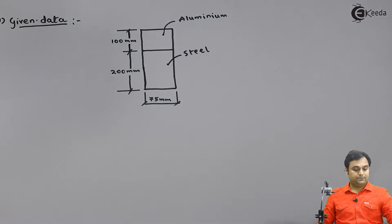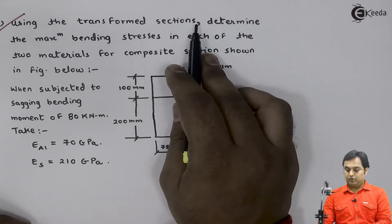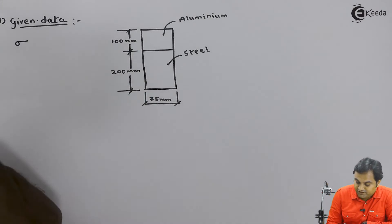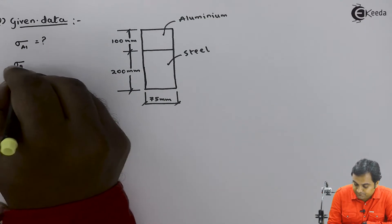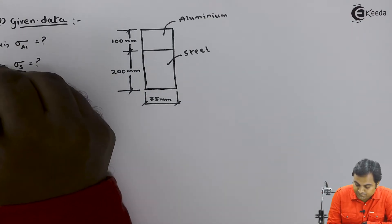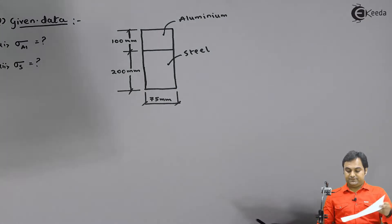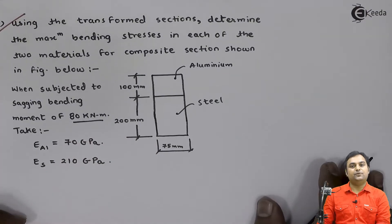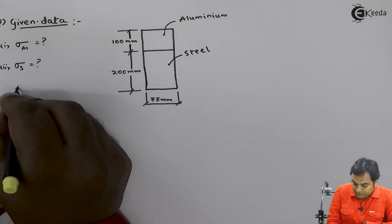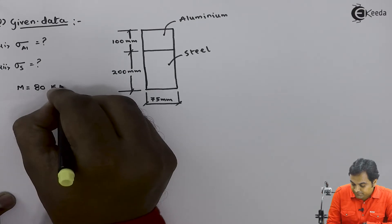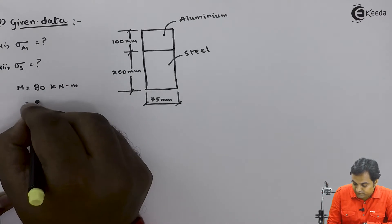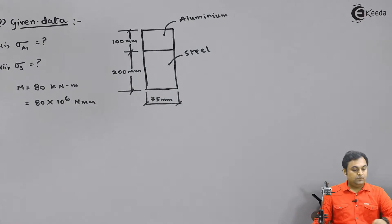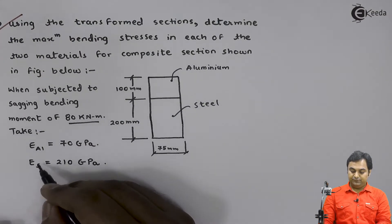Using the transformed sections, we determine the maximum bending stress in each of the two materials for the composite section — that is, bending stress in aluminium and in steel. When subjected to a sagging bending moment of 80 kilonewton meter, M = 80 kN·m. I will convert this: M = 80 × 10⁶ N·mm.